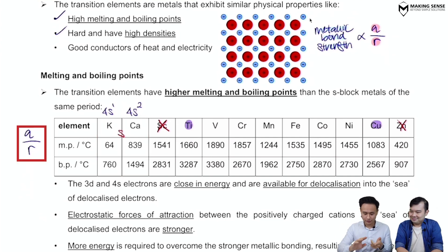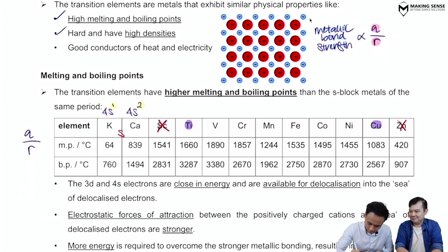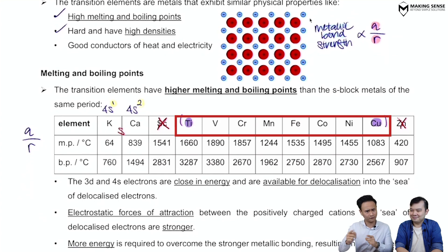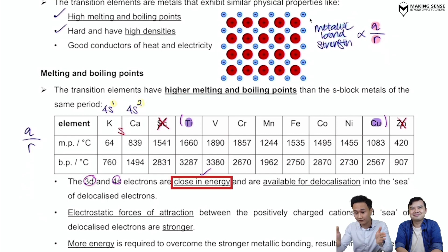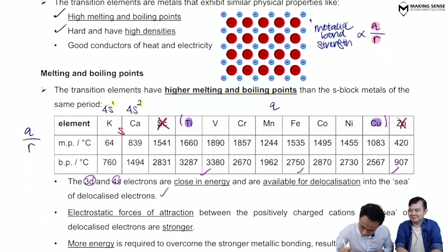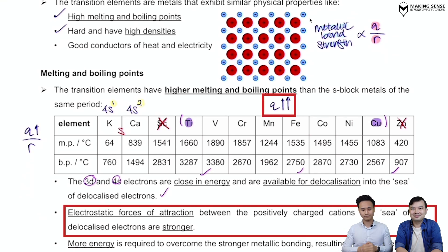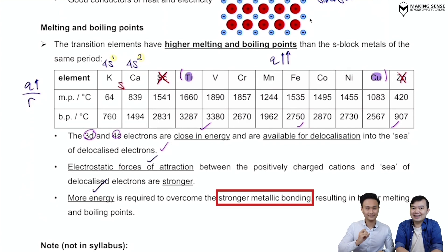For potassium and calcium (s-block), you delocalize only the 4s electrons — charge +1 and +2 respectively. But for transition metals from titanium to copper, the 4s and 3d electrons are very close in energy, so both can be delocalized into the sea of delocalized electrons. This gives transition metals a much higher charge, resulting in stronger electrostatic attraction, stronger metallic bond strength, and therefore significantly higher melting points than s-block elements.